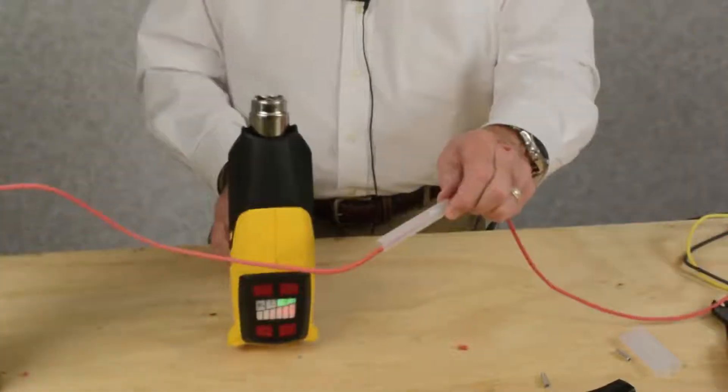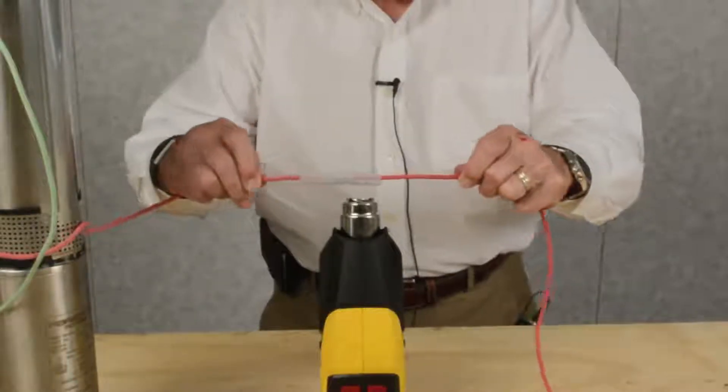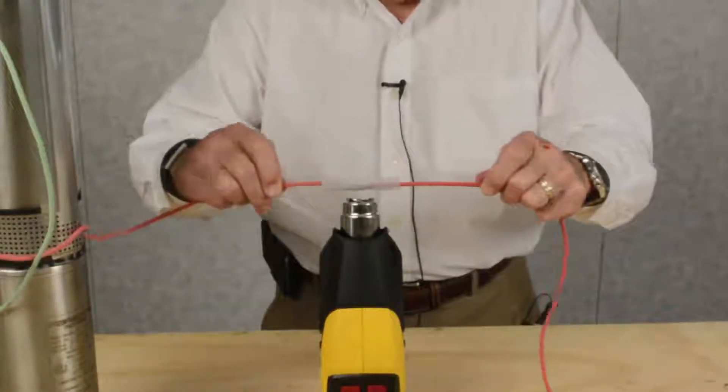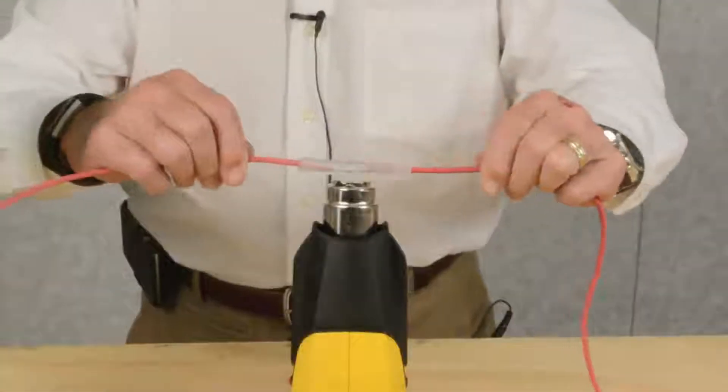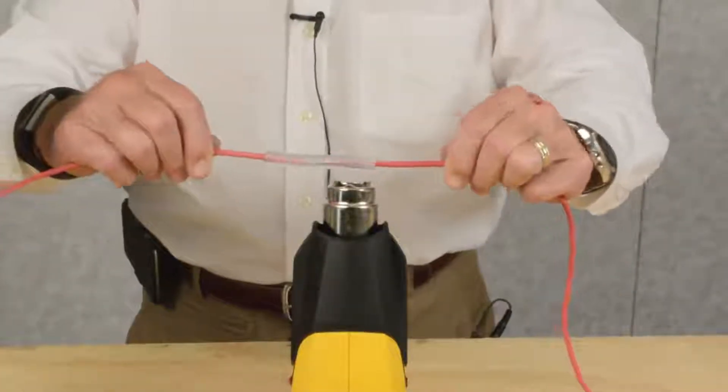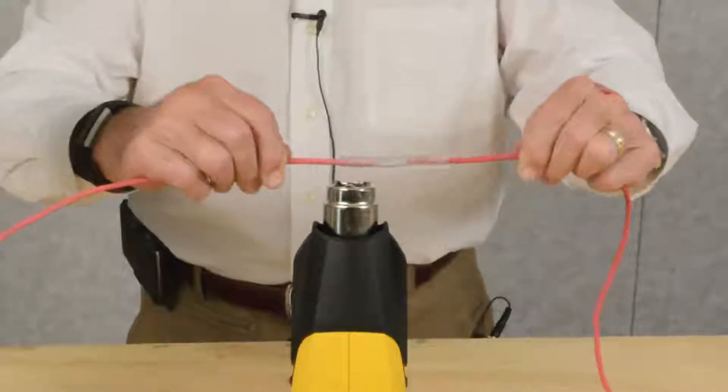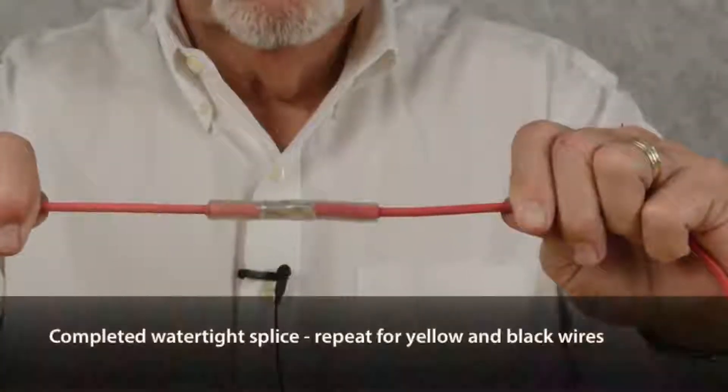Next thing you do is slide your tubing up on your splice. Take your heat gun and start moving it back and forth. What's going to happen, you're going to start seeing some of the adhesive coming out on the ends.